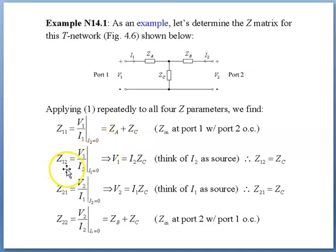Next, for Z12, taking V1 and I2 as your source when I1 equals 0, that will give you V1 equals I2·ZC. Finally, this will give you Z12 equals ZC.